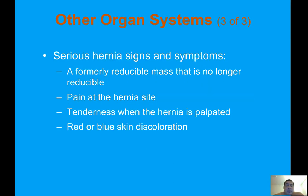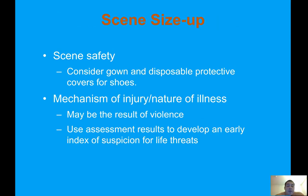Serious hernia signs and symptoms include a formerly reducible mass that is no longer reducible, pain at the hernia site, tenderness when the hernia is palpated, and red or blue discoloration — cyanosis indicates insufficient oxygen to the organs. During scene size-up, consider gown and disposable protective covers for shoes. The mechanism of injury or nature of illness may be the result of violence. Use assessment results to develop an early index of suspicion for life threats.